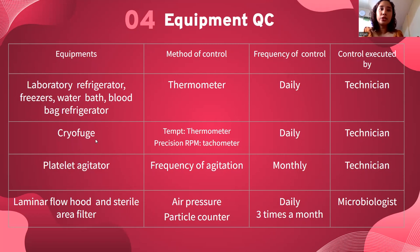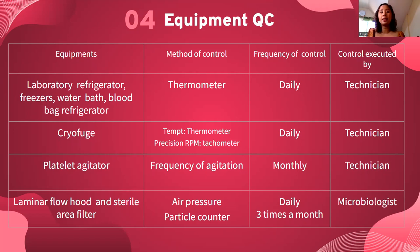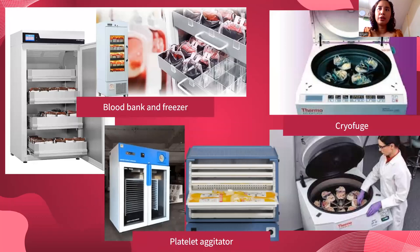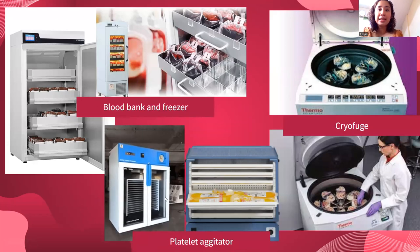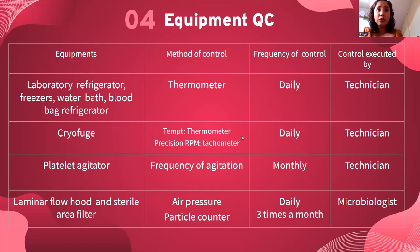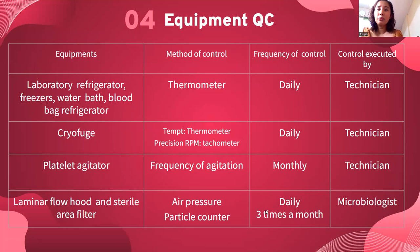The cryophage is used for component preparation — for example, if you need packed RBCs and platelets from whole blood, you use a cryophage. The blood unit is placed in the cryophage and components are separated into their respective satellite bags. The blood bank freezer temperature should be checked daily — if temperature is out of range, it will ruin the blood bags. The cryophage speed is checked using a tachometer, and temperature is also monitored. The platelet agitator's frequency of agitation must also be checked daily, as it reduces the chance of clotting among platelets.